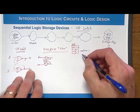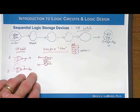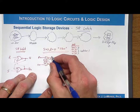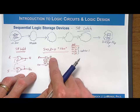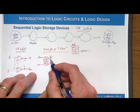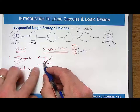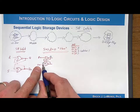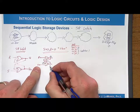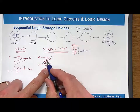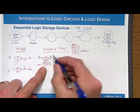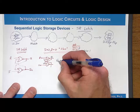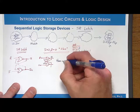If I'm storing, I need to be able to store both states. Let's try storing a 0. Say Q starts at 0 — that 0 is fed back to the other NOR gate input, so now I have 0 and 0, which corresponds to an output of 1. That 1 is driven back into the first NOR gate; now I have a 1 on the input, which reinforces the 0 output. This stores a 0.